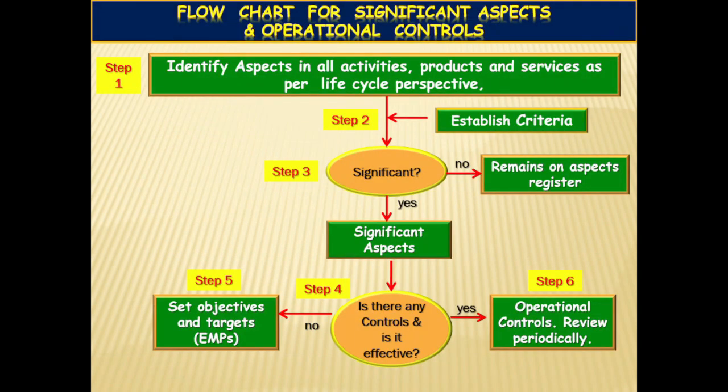This is a simple flowchart — how to identify the significant aspects and the operational controls. Step 1: Identify aspects in all the activities of the business as per life cycle perspective. Step 2: Establish criteria for identifying the severity of the impacts. Step 3: Using the criteria, identify the significant aspects. Step 4: Ensure the operational controls for significant aspects are effective. Step 5: If the operational controls are not effective, set objectives with targets to address the significant aspects. Step 6: Review the operational controls periodically and show they are effective.